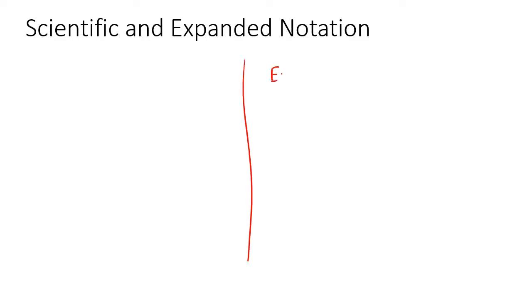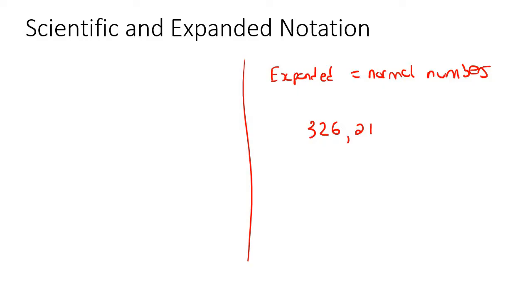So let's talk about what scientific notation is and what expanded notation is. Expanded notation is just normal numbers, such as 326,21, or the number 21814, or maybe the number 0,2138. Those are just normal numbers — there's nothing weird there.